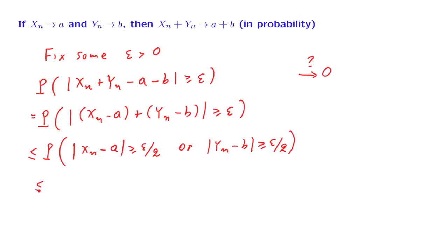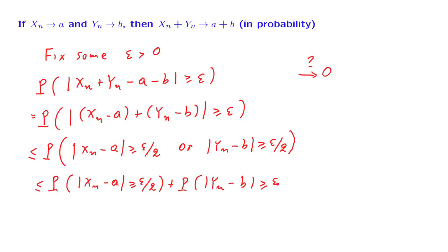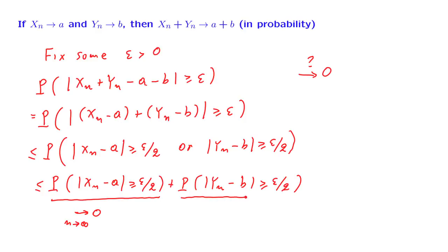Now we use the union bound: the probability that something happens or something else happens is less than or equal to the sum of their probabilities. Since Xn converges to a in probability, by definition this quantity — P(|Xn minus a| > epsilon/2) — converges to 0 as n goes to infinity. Similarly, since Yn converges to b in probability, P(|Yn minus b| > epsilon/2) also converges to 0. This is one sequence converging to 0, and another sequence converging to 0, so their sum also converges to 0.